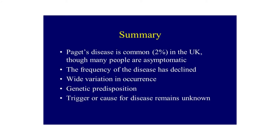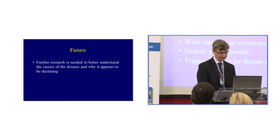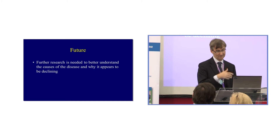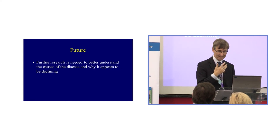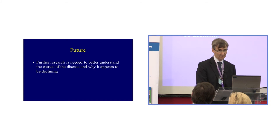In summary: Paget's disease is common; many people are asymptomatic; the frequency of the disease has declined; there is wide variation in occurrence worldwide and within the UK; there is a genetic predisposition and there seems to be a trigger, but that remains uncertain. We need further research to better understand the cause of this disease and why it appears to be declining. Thank you very much.